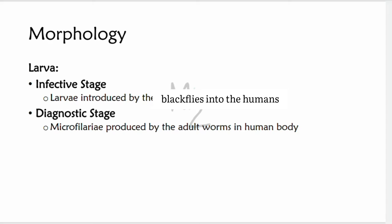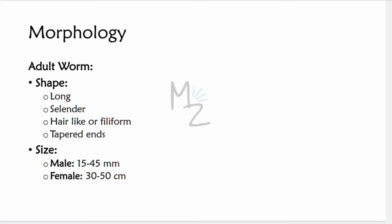Adult worms are long, slender, hair-like, or filiform — meaning thread-like — and they taper at their ends, becoming narrow at each end. The ends may be pointed or round but are narrow compared to the whole body. As with all nematodes, the male is smaller than the female. For Onchocerca volvulus, the male varies from 15 to 45 millimeters, while the female varies from 30 to 50 centimeters.